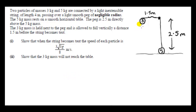Two particles of mass 3 kg and 5 kg are connected by a light, inextensible string of length 4 m, passing over a light, smooth peg of negligible radius. The peg is 2.5 m directly above the 5 kg mass. The 3 kg mass is held next to the peg and is allowed to fall vertically a distance of 1.5 m before the string becomes taut.